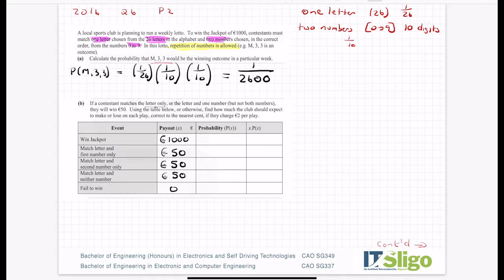Using the table below or otherwise find how much the club should expect to make or lose. This is really a typical expected value of x question where you charge so much for a game, you work out how much you're expected to pay out. The expected value of x is Greek letter sigma, the sum of x, all of the values by the probability of them occurring. Very important formula that you need to know, again not in the log tables. You have to know the expected value of x formula.